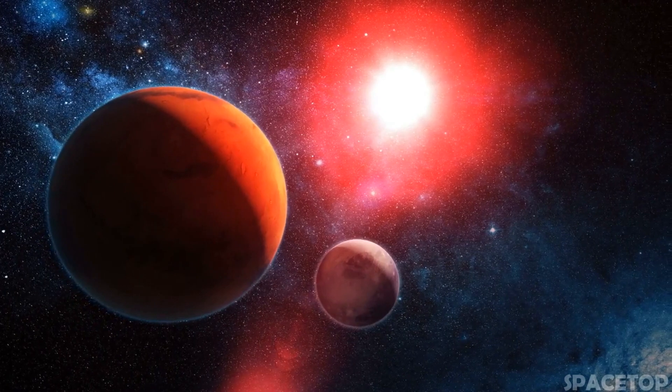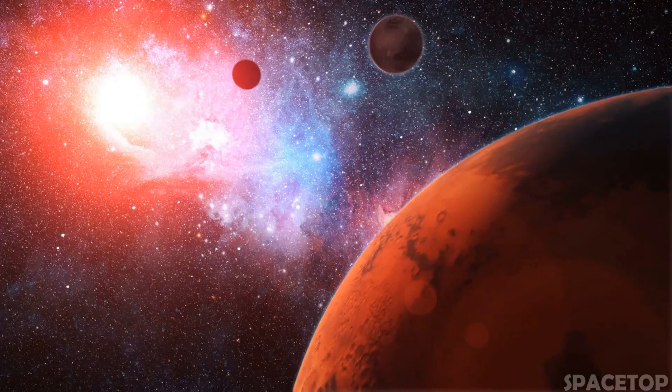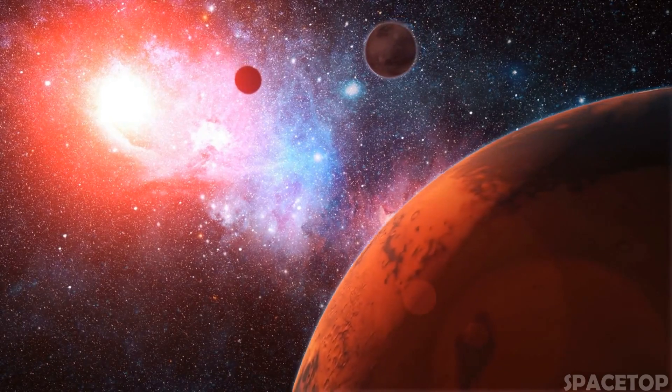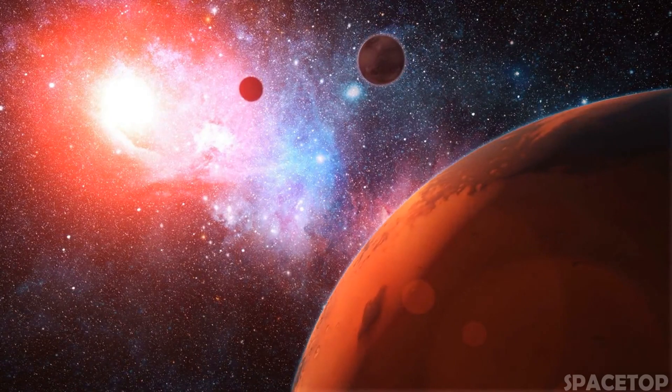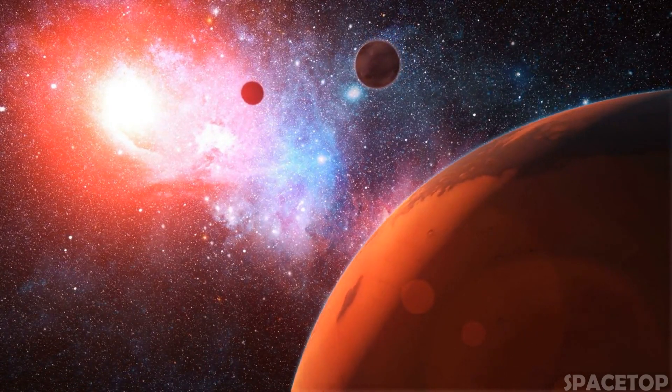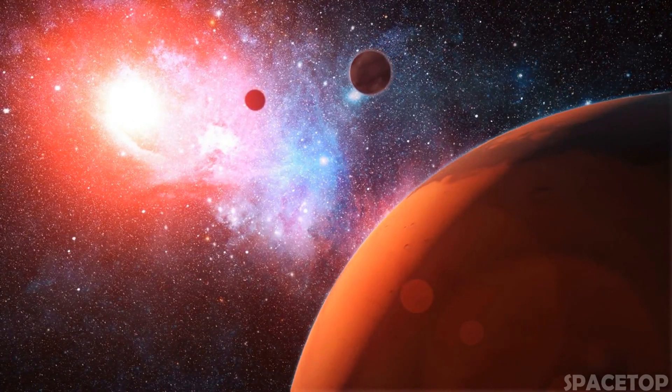The planet orbits star A, which has a relatively close companion, Star B. They both revolve around each other every 30 years, but there is also a third gravitationally bound star, the C star. And this star orbits the stars A and B every 400 years.